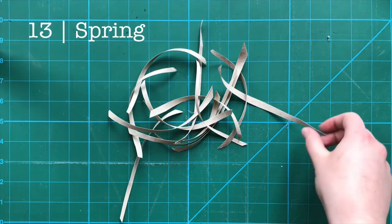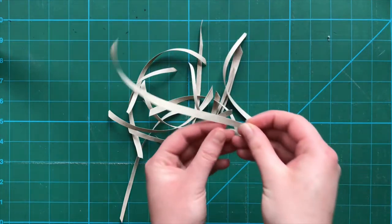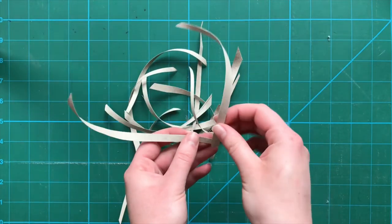Number 13, spring. Take two strips, lay them overlapping at the ends. Fold them over each other, alternating as you go. This will make a spring.